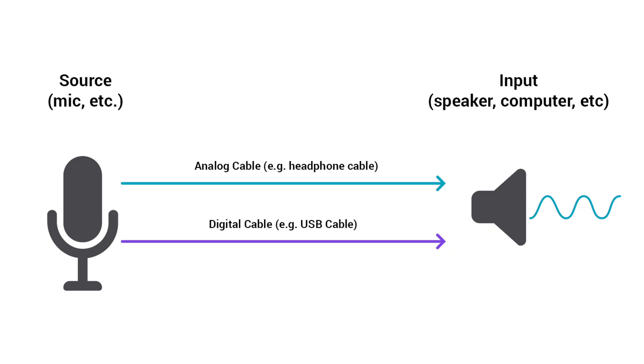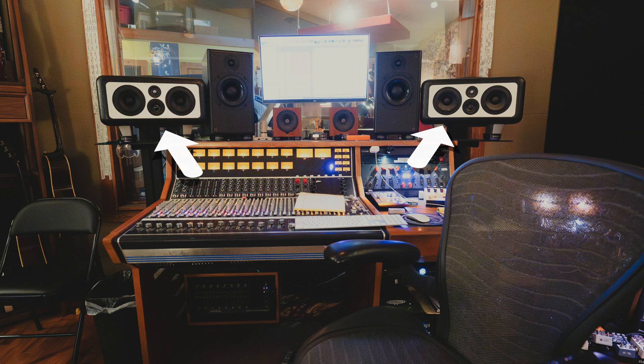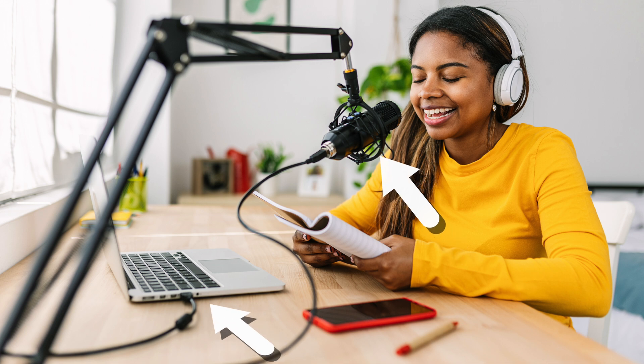The job of a cable, whether it's analog or digital, is to carry audio signals from point A to point B — whether it's from your soundboard to your speakers, or from a podcast mic to a computer. Analog and digital cables just do it in different ways.